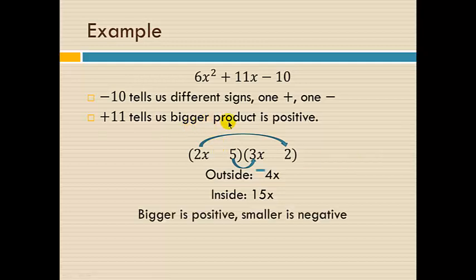We know that the bigger product is positive. So the bigger product, 15x has to be positive. So we'll make the outside, the smaller one negative, the negative 4x. So the outside, we need to put the negative in the second factor. So we have 2x plus 5 times 3x minus 2. Notice 15x minus 4x is the 11x that we want in the middle.